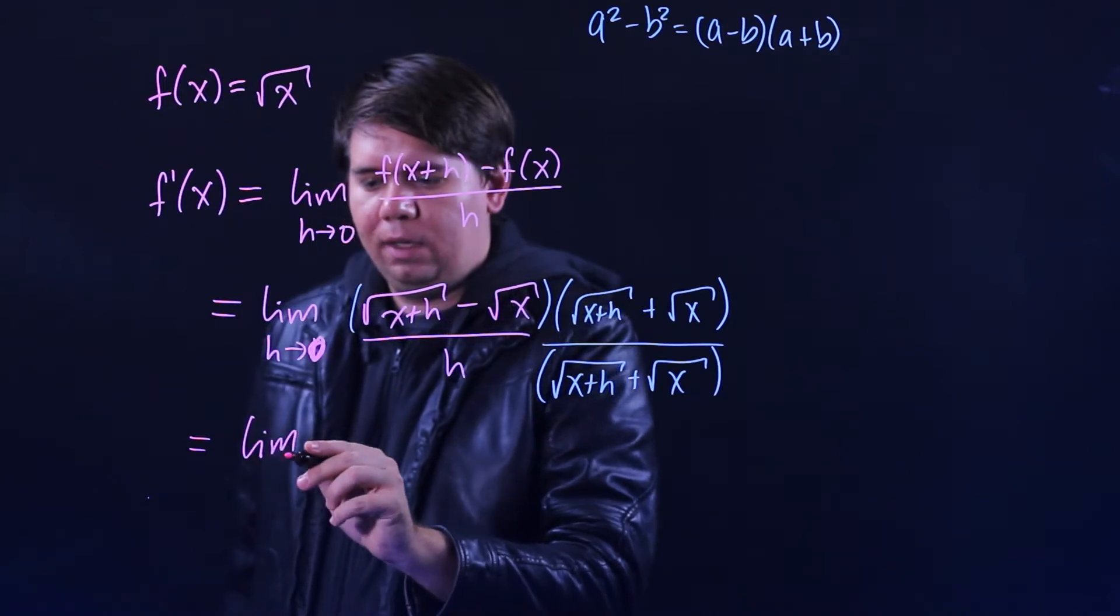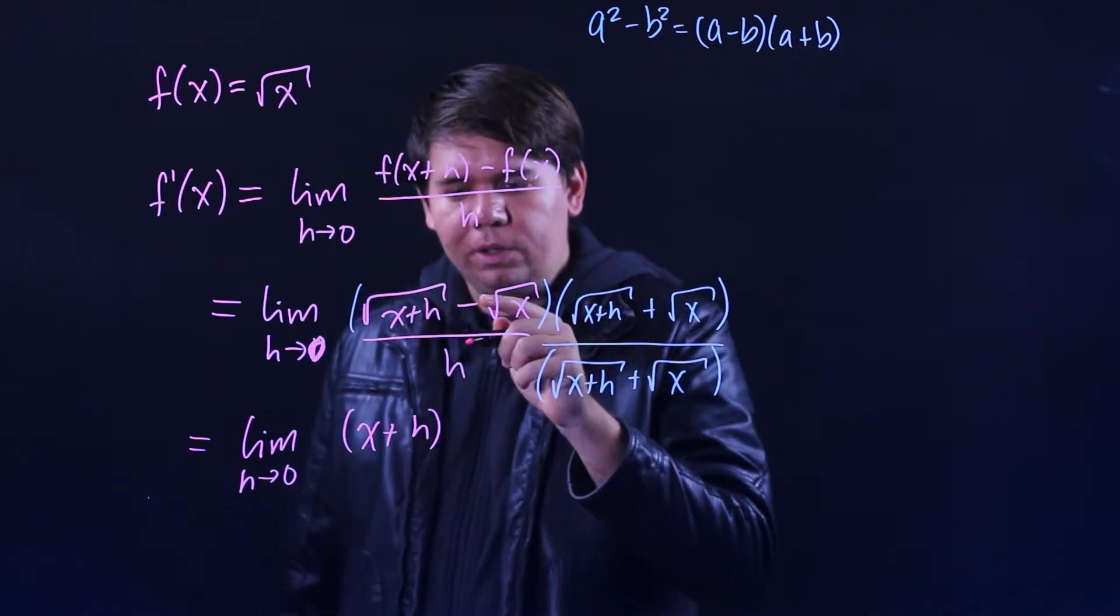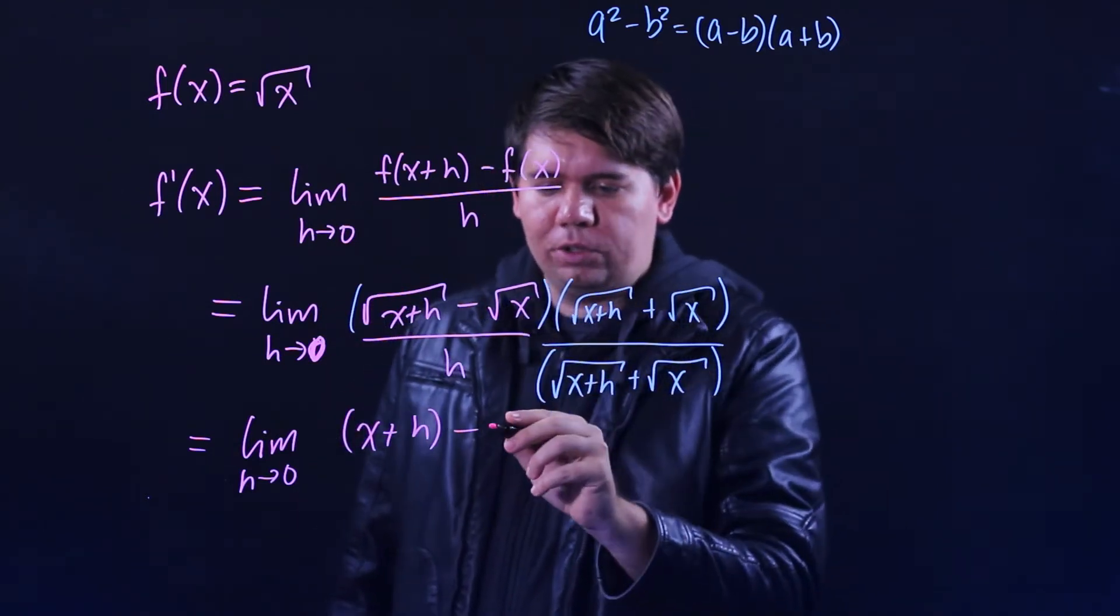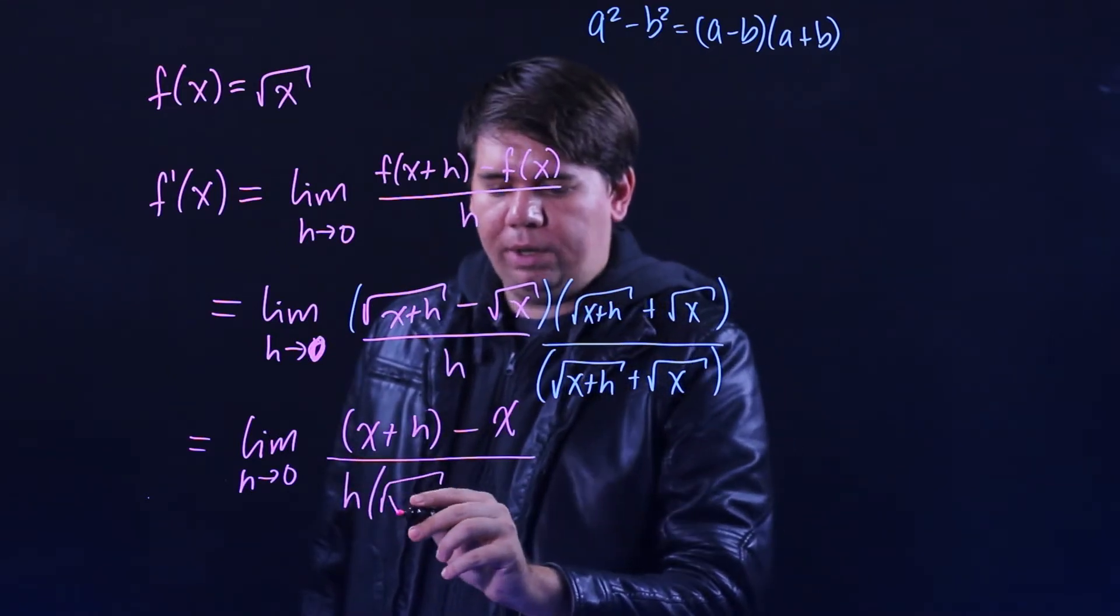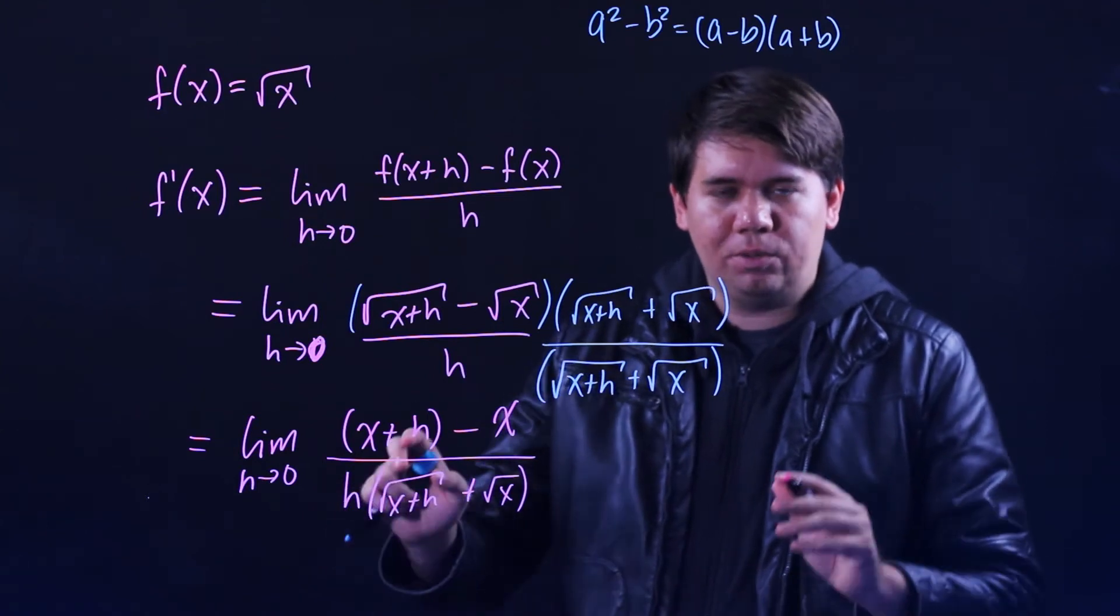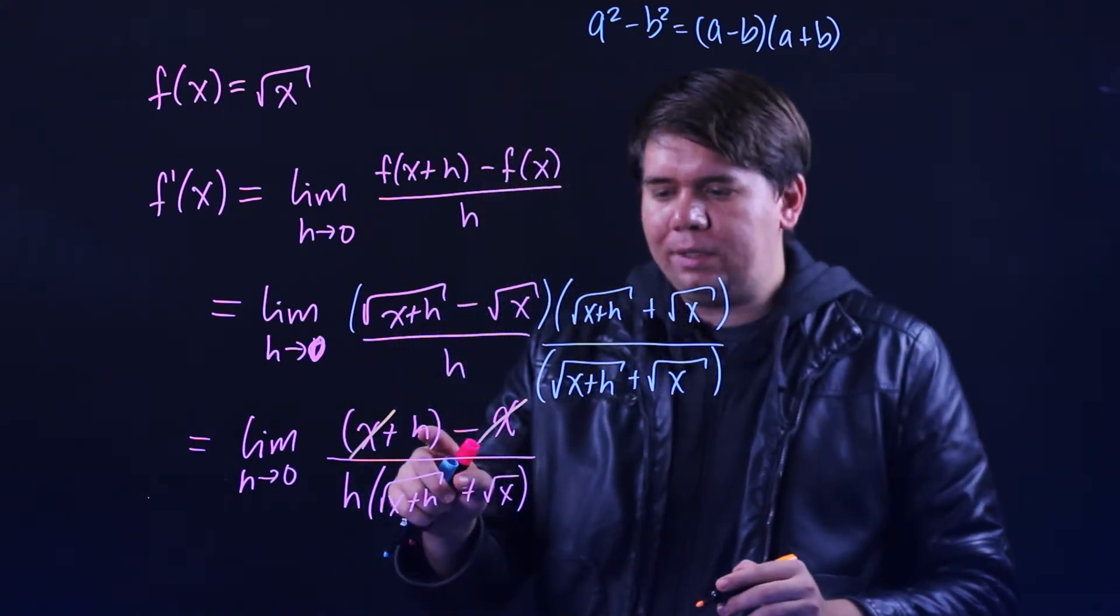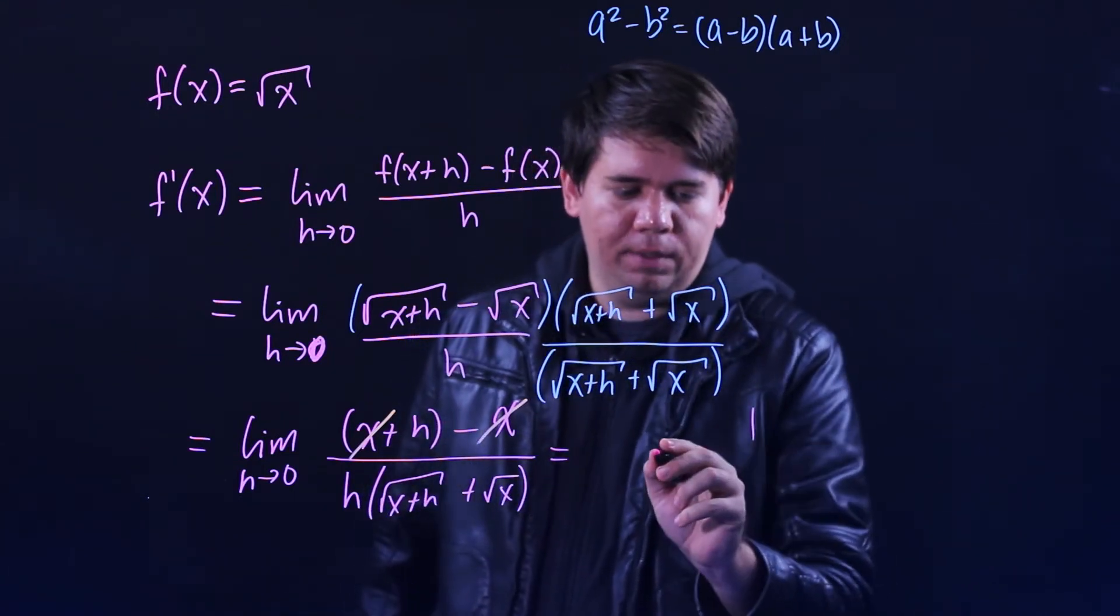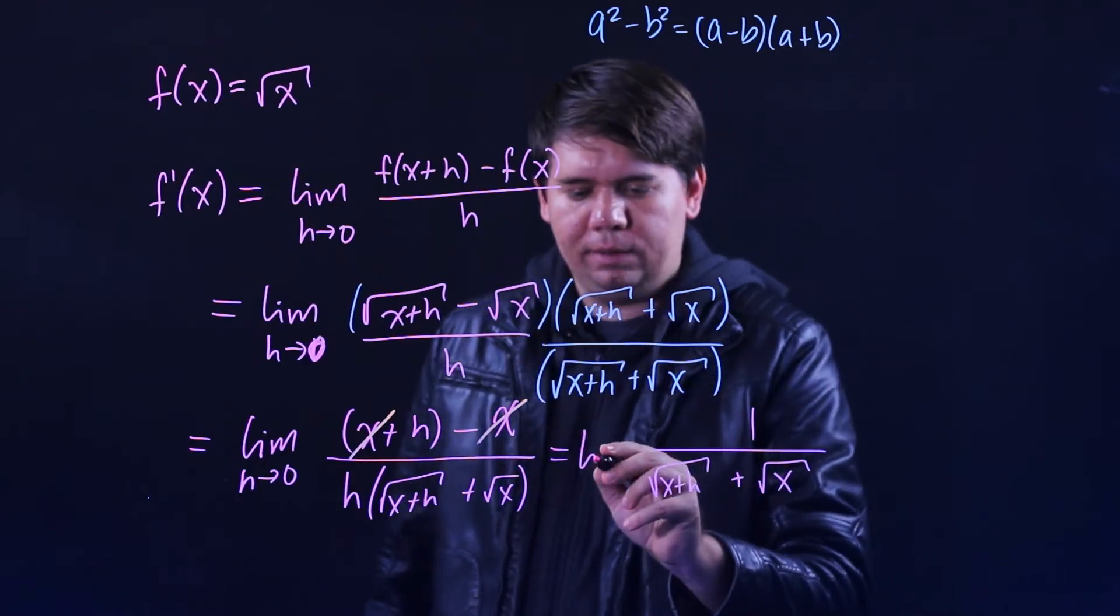What does this give us? We now have the limit as h goes to 0, on top it will be x plus h minus x, all over h times the square root of x plus h plus the square root of x. The x minus x here cancel leaving just an h on top, and then that h can cancel with the h on bottom, leaving just 1 on top and on bottom the square root of x plus h plus the square root of x.